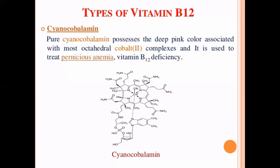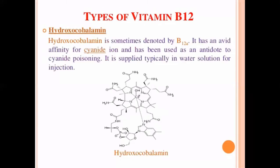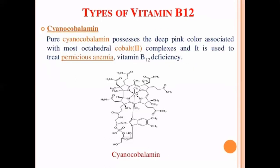The three important types of vitamin B12 are: cyanocobalamin, hydroxycobalamin, and methylcobalamin. Cyanocobalamin is used in the treatment of pernicious anemia due to vitamin B12 deficiency and contains an octahedral cobalt-2 compound in its structure. Hydroxycobalamin, sometimes denoted vitamin B12a, has affinity for the cyanide ion and is used in cyanide poisoning — acting as an antidote.